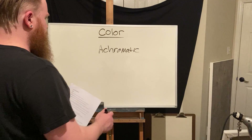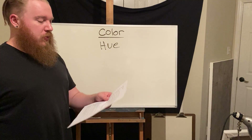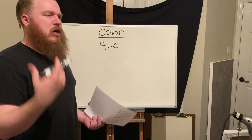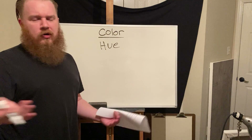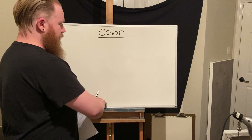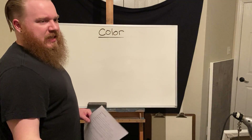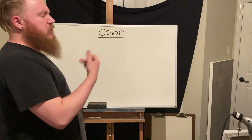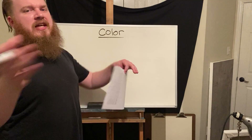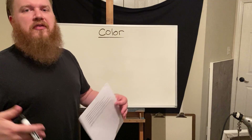A hue refers to a particular wavelength of spectral color to which we give a name — things like red, yellow, orange, green, blue, purple, or violet. This is fairly similar to local color, however local color can be much more specific — like turquoise, magenta, or teal — whereas hue references the broader spectrum color. For example, canary yellow, cadmium yellow, and lemon yellow are all local colors, but the hue itself is simply yellow.